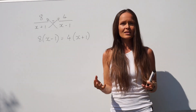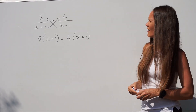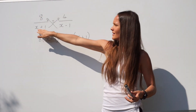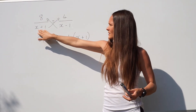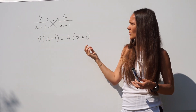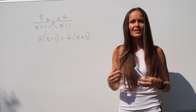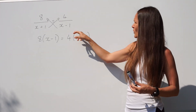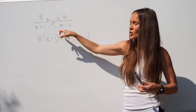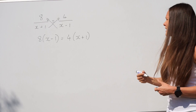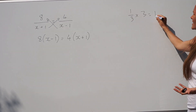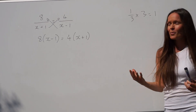Now the denominators have disappeared. If we look at the first fraction, when I multiply this by x plus 1, the denominator just cancels, because 1 over x plus 1 multiplied by x plus 1 is just 1. And likewise on the right hand side, when I multiply the right hand side by x minus 1, the denominator just cancels — you get 1. If you think of it like this, a third times 3, that's just 1. So that's why the denominators cancel.